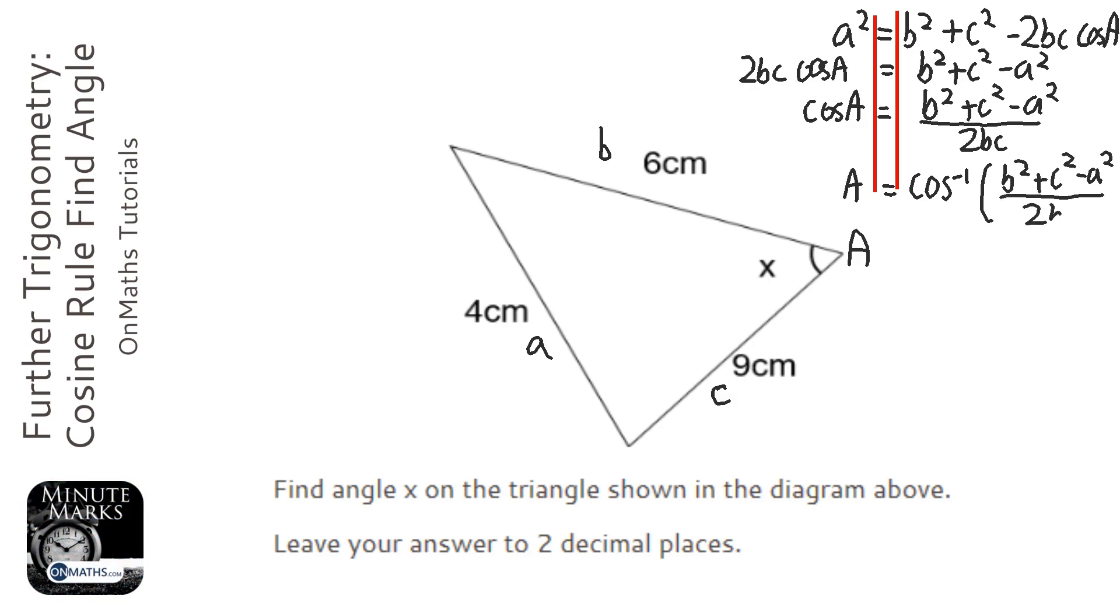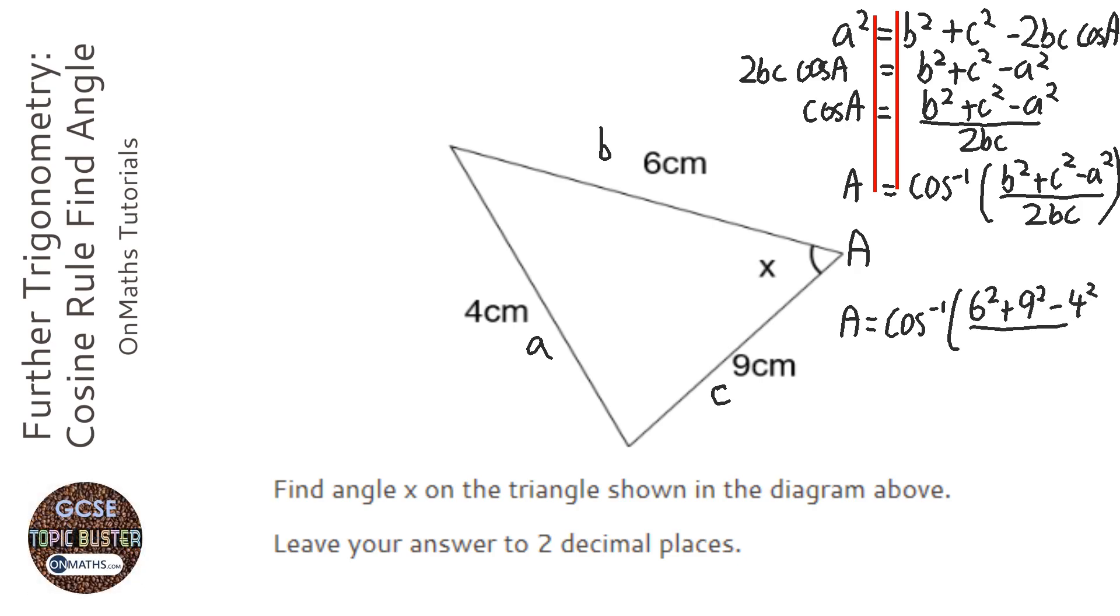And you can just learn this formula to work out the angle. Okay, so I'm going to put everything into this formula. So it's inverse cos, and we've got, what have I called b? So it would be 6 squared plus 9 squared minus 4 squared over 2 times 6 times 9.